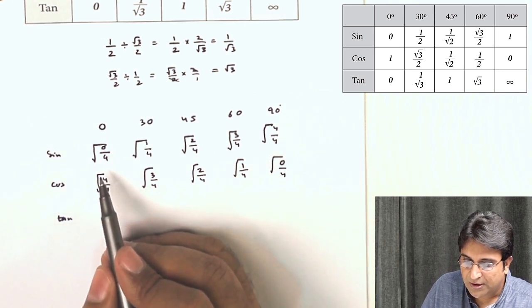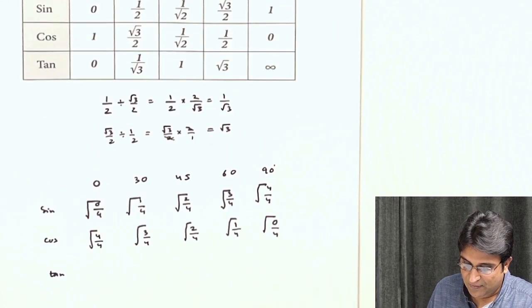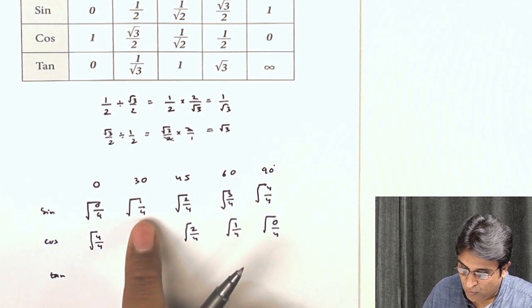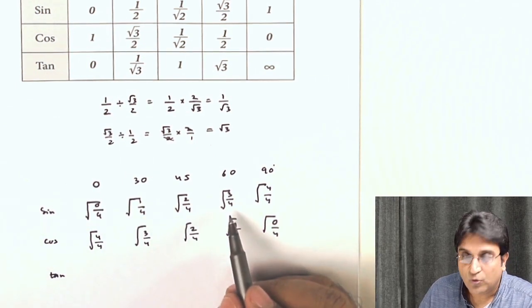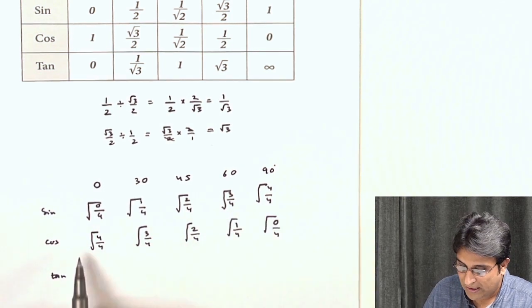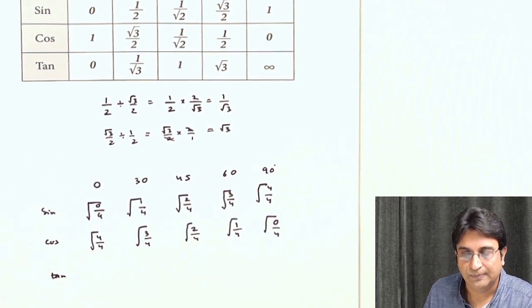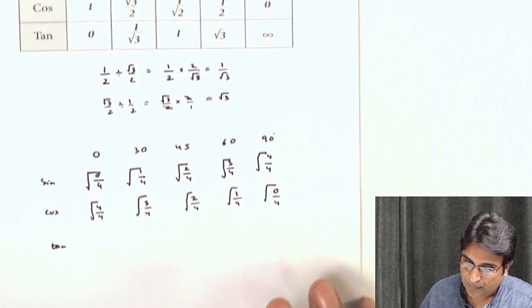Now see, 0 by 4 is nothing but 0. Root 1 by 4 is 1 by 2. Root 2 by 4 is 1 by root 2. Root 3 by 4 is root 3 by 2. Root 4 by 4 is 1. And this is the same thing reversed.